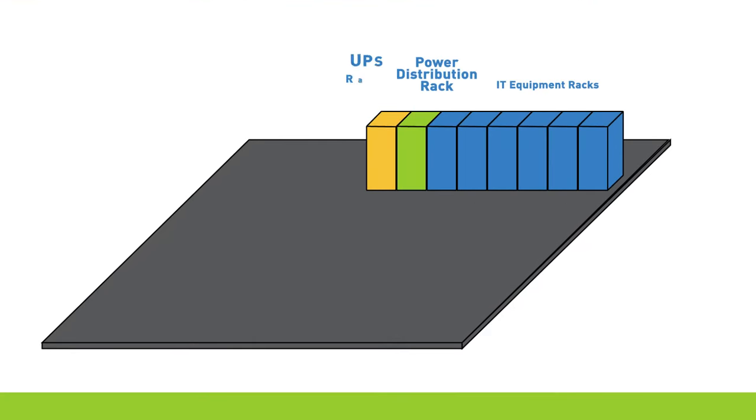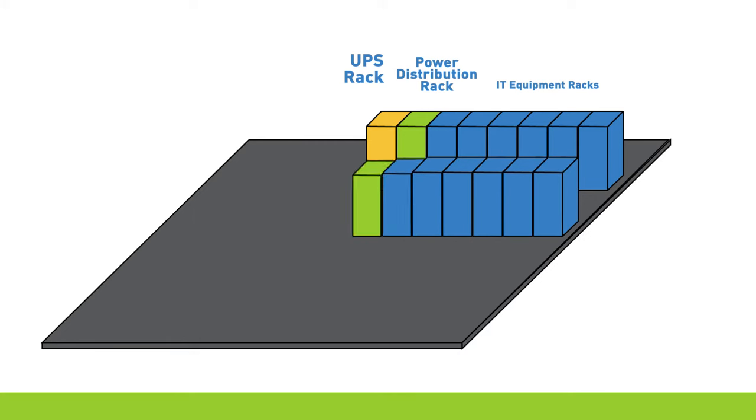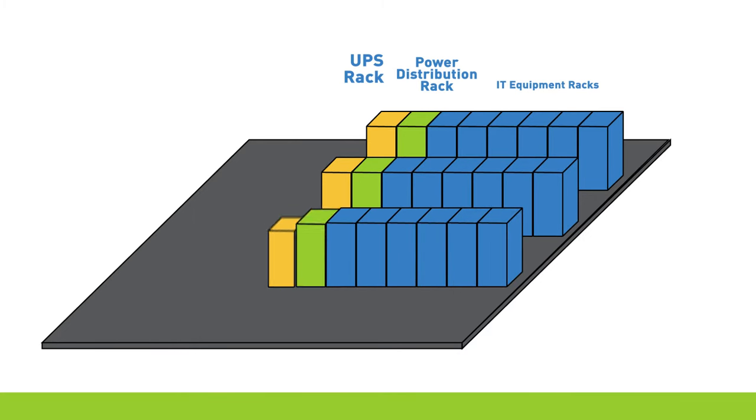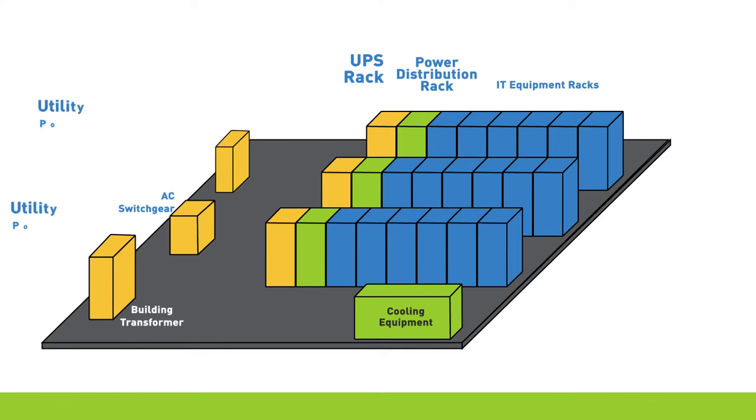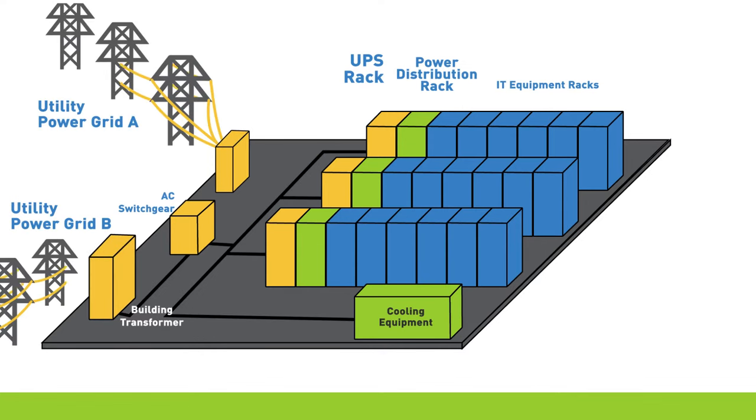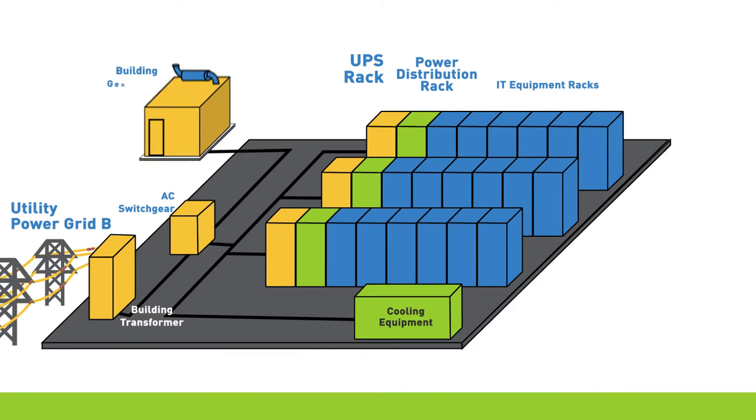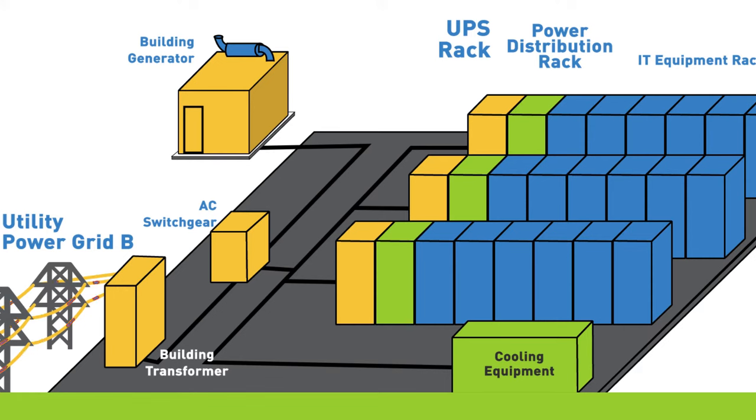The best goal for a Class 4 data center would be to have two feeds from separate utilities or from at least two main substations. This would provide two completely redundant power chains including redundant access to the utility power grid. Since this is very expensive and usually not feasible, the most popular option is to backup the utility power feed with diesel generators.